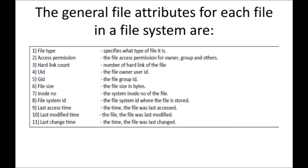Next is file size. File size is also one type of attribute, and it will be measured in bytes. INODE number is the system INODE number of the file. For every file that is created, an INODE number is compulsory. INODE number is like an address — all file-related data will be stored in the INODE record. For now, think of INODE as the address of the file, though much more data is also stored there.